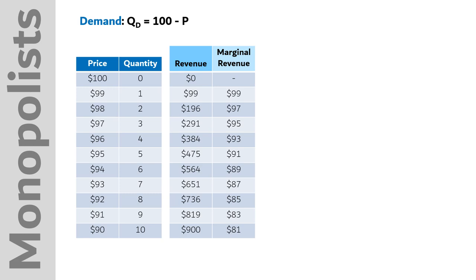So with this, we can calculate revenue and marginal revenue. Revenue is just price times quantity. 100 times zero is zero, 99 times one is 99, 98 times two is 196, and so on.